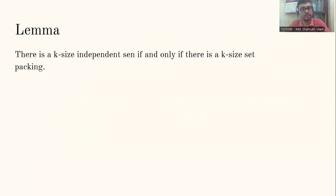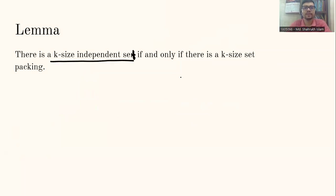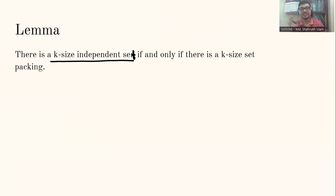Now let's state the lemma for this reduction. The lemma is: there exists a k-size independent set if and only if there exists a k-size set packing. So if we have a k-size independent set we will have a k-size set packing, and conversely, if we have a k-size set packing we will have a k-size independent set.